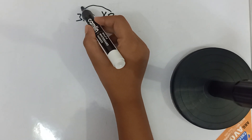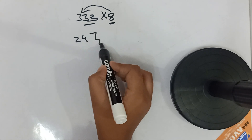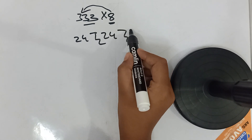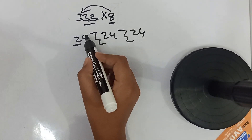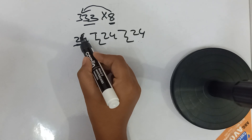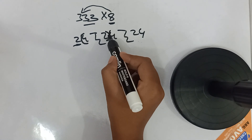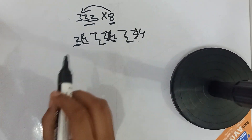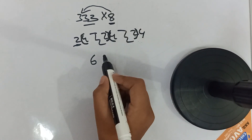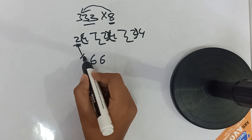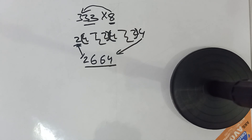Let's take 333 multiplied by 8. We multiply 8 by 3 to get 24, then step, 24 again, then step, 24 again. Now we leave the first digit and make brackets: 4 plus 2, then 4 plus 2. So 4 plus 2 is 6, and again 4 plus 2 is 6. We bring down the first 2 and the last 4. So our answer is 2664.